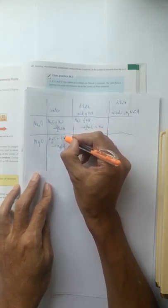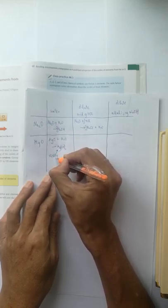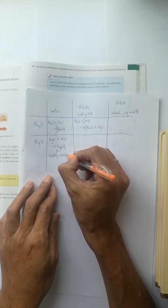However, magnesium hydroxide is not very soluble, only slightly soluble in water, so it forms a suspension.